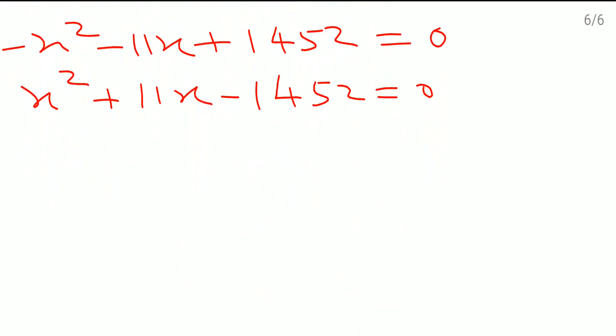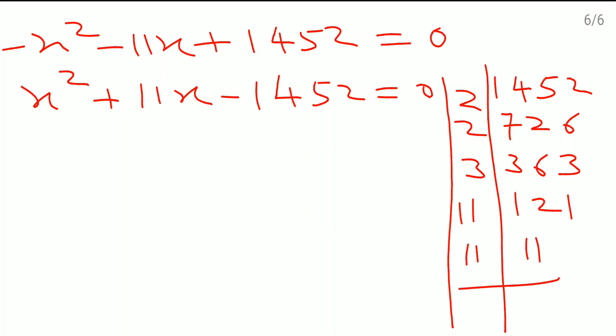Now I need two numbers whose product is 1452 and sum is 11. For that we will do the prime factorization. 1452: 2, 726, 2, 363, 3, 121, 11, 11, because 121 is the square of 11. These factors we got. Now we just have to rearrange these factors.